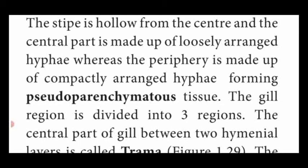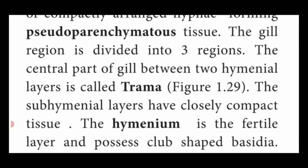Both regions — the central and peripheral of the stipe — are made up of pseudoparenchymatous tissue. Next, the cross section of the gill is divided into three regions.